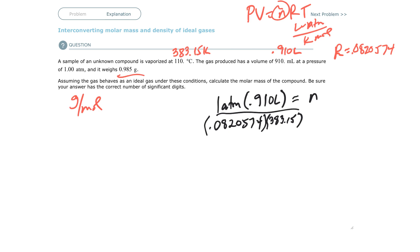So we have 0.91 divided by 0.0820574 divided by 383.15 equals. That's going to give us moles equals 0.028943751 moles.